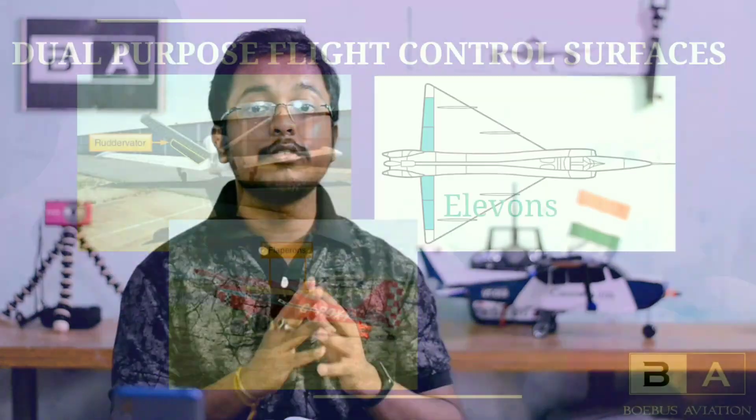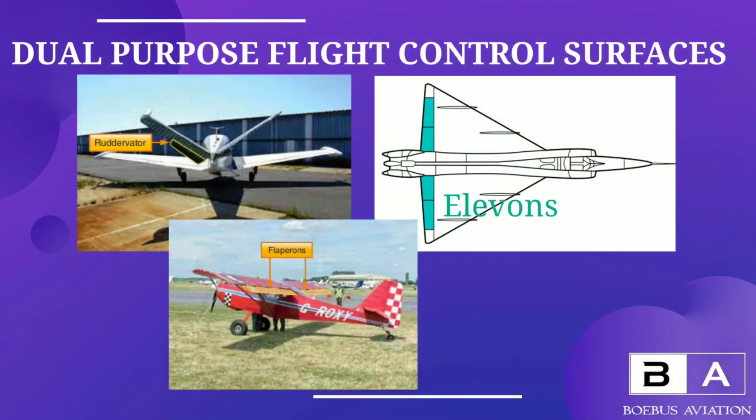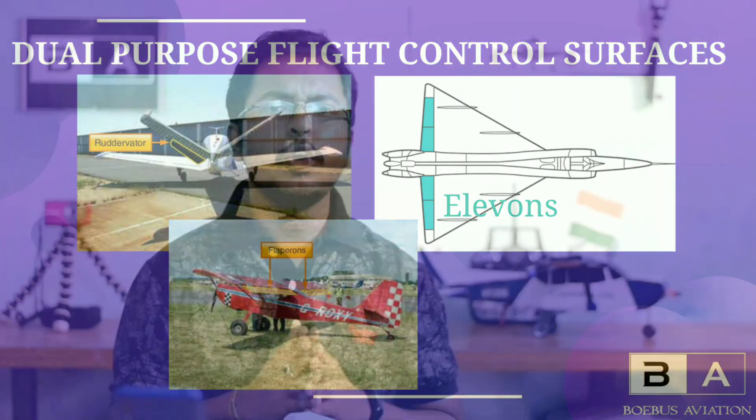Manufacturers have come up with a third type of control surfaces, which are called dual-purpose flight control surfaces, with a lot of advantages. The pilot doesn't need to control two different control surfaces. Instead, they can operate a single one and it will work as a combined control, performing the function of two different surfaces.